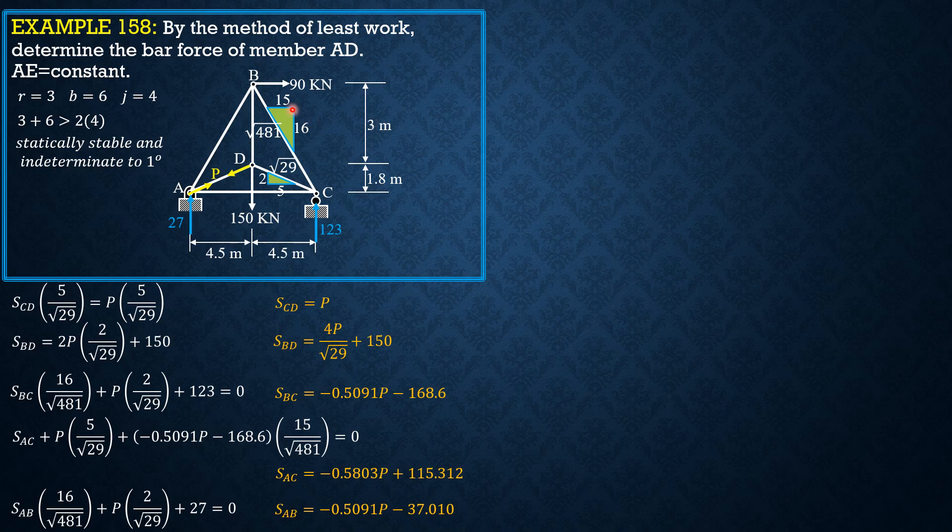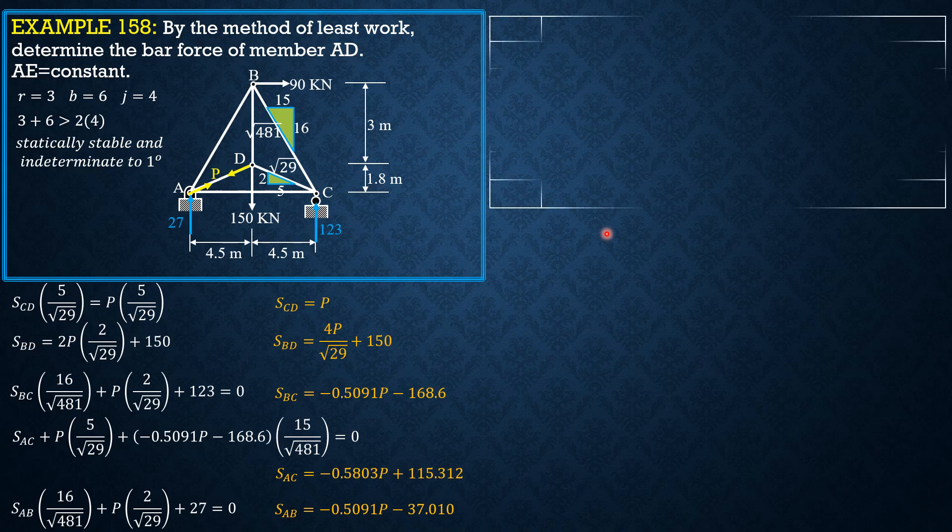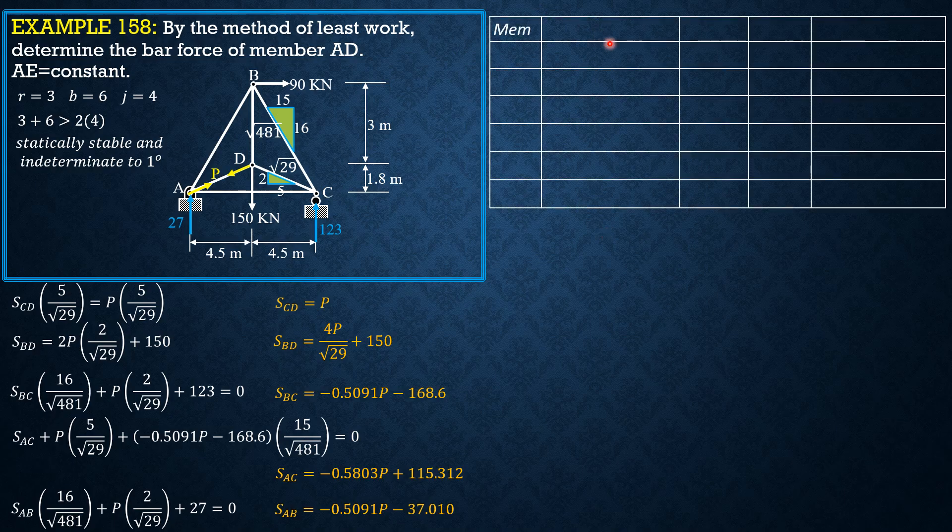So let's tabulate. We have member, we have the stress S in kilonewtons, partial of S with respect to P, which is member AD, P is member AD, stress of AD, length in meters, then the product.